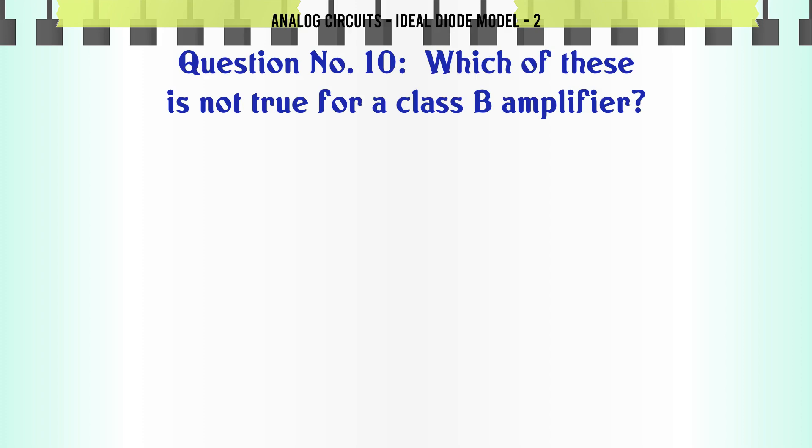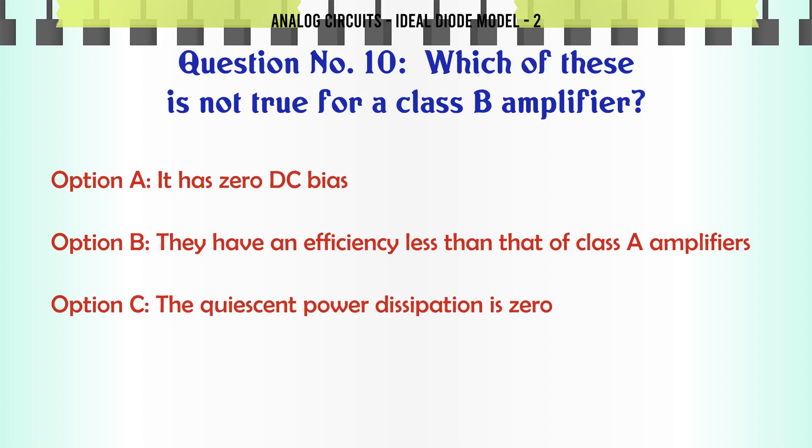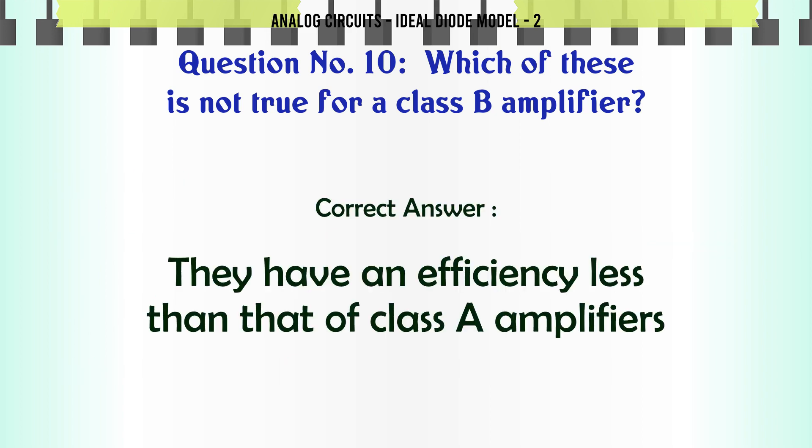Which of these is not true for a class B amplifier? A) It has zero DC bias, B) They have an efficiency less than that of class A amplifiers, C) The quiescent power dissipation is zero, D) The conduction angle is only 180°. The correct answer is: They have an efficiency less than that of class A amplifiers.